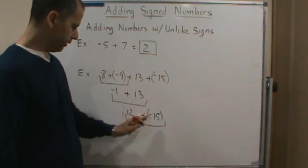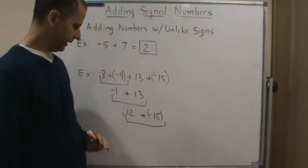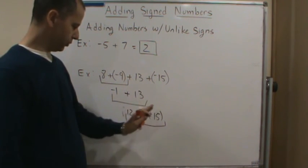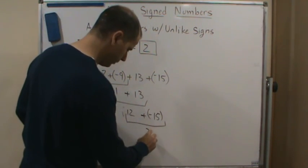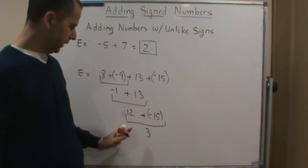So again, I take the absolute value of both, which gives me 12 and 15. And so I subtract those two. So I subtract 15 minus 12, which gives me 3. And then which one's bigger?